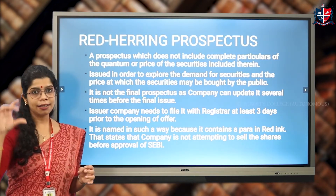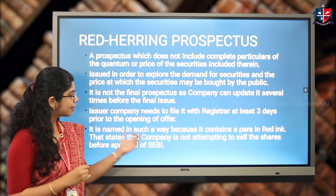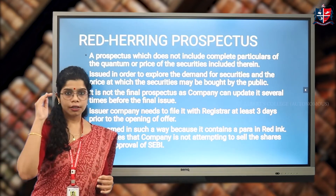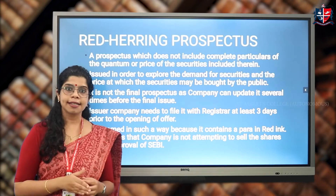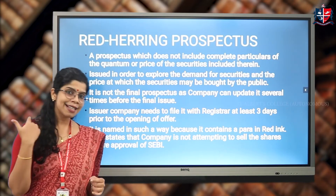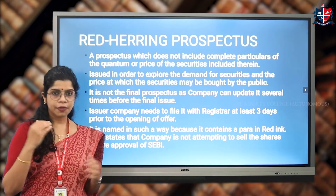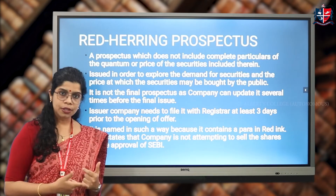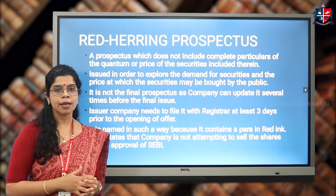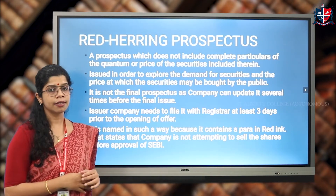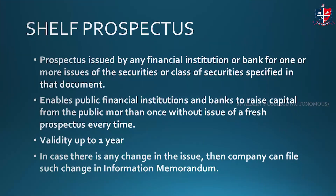The red herring prospectus is named as such because it contains a paragraph in red ink which states that the company is not attempting to sell the shares without approval. The final prospectus is filed with SEBI, and only after SEBI gives a green flag can the company go in for the issue. After the entire bidding process is over, the final prospectus is prepared, submitted to SEBI, and upon SEBI's approval, the company proceeds with the final issue.